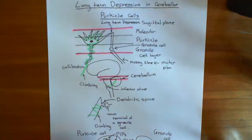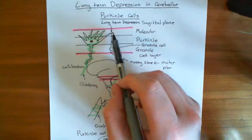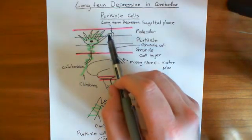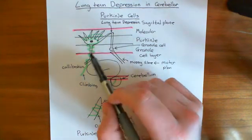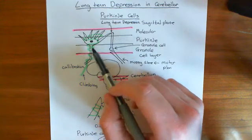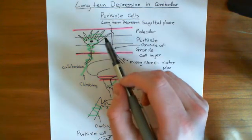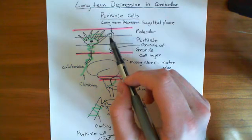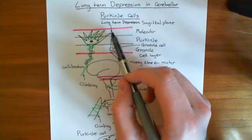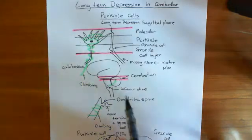We've discussed how if a synaptic contact between a granule cell and a Purkinje cell is active at the time that a climbing fibre is also active, then that will produce long-term depression — i.e. a weakening of this synaptic contact between the granule cell and the Purkinje cell.